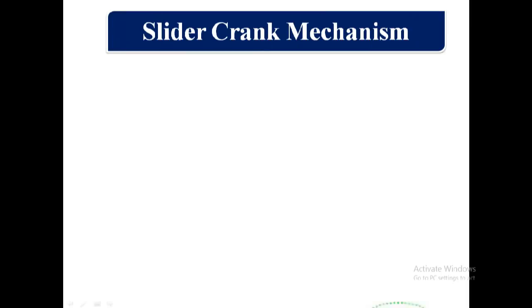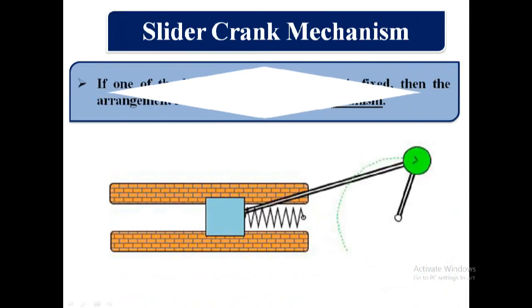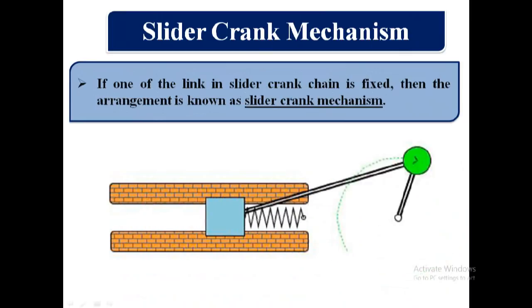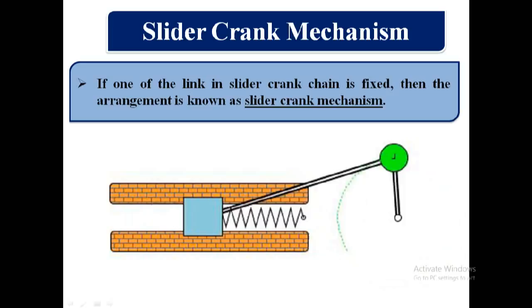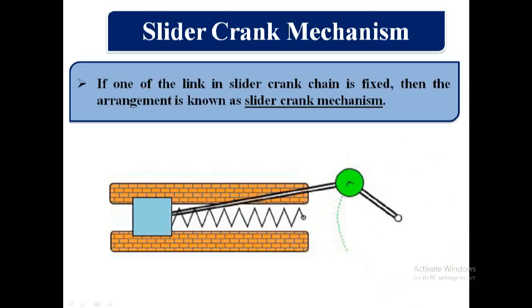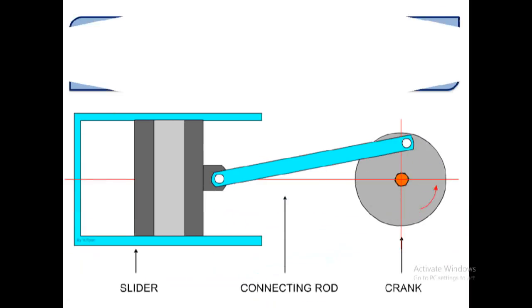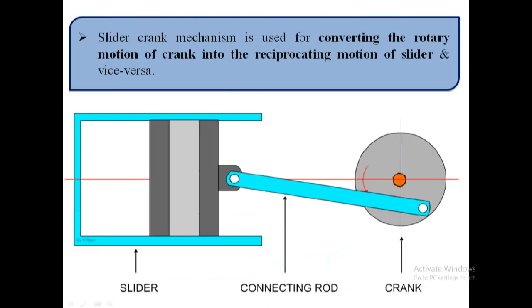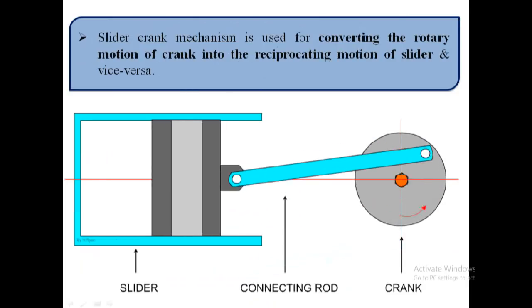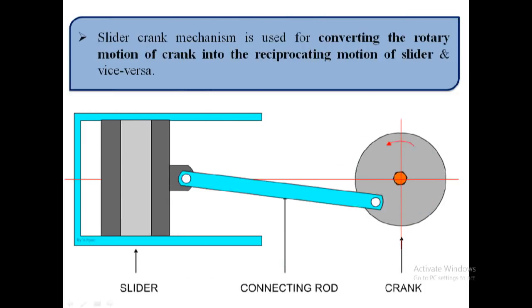Now we will discuss about slider crank mechanism. If one of the links in a slider crank chain is fixed, then the arrangement is known as slider crank mechanism. Slider crank mechanism is used for converting the rotary motion of the crank into the reciprocating motion of the slider, and vice versa.